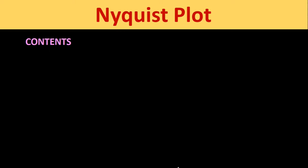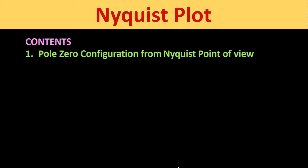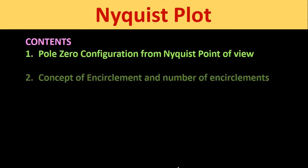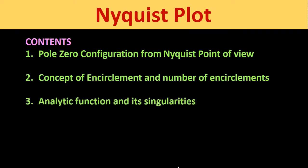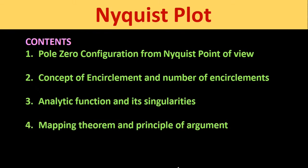Now let us quickly discuss the contents which we are going to cover in the Nyquist plot topic. First one is pole-zero configuration from Nyquist point of view. Second one is concept of encirclement and number of encirclements. Third one is analytic function and its singularities. Fourth one is mapping theorem and principle of argument, and fifth one is Nyquist stability criteria.